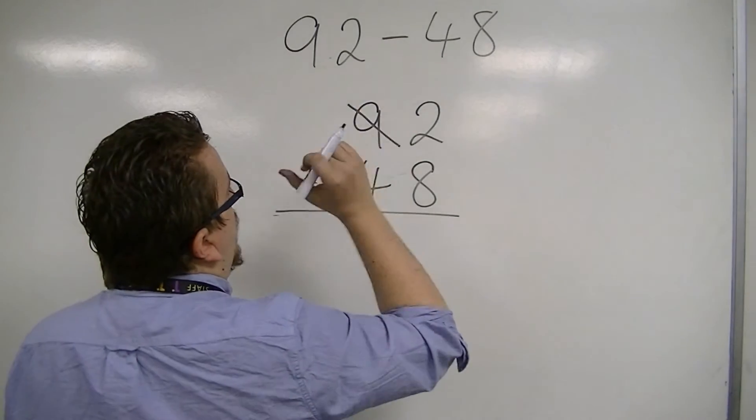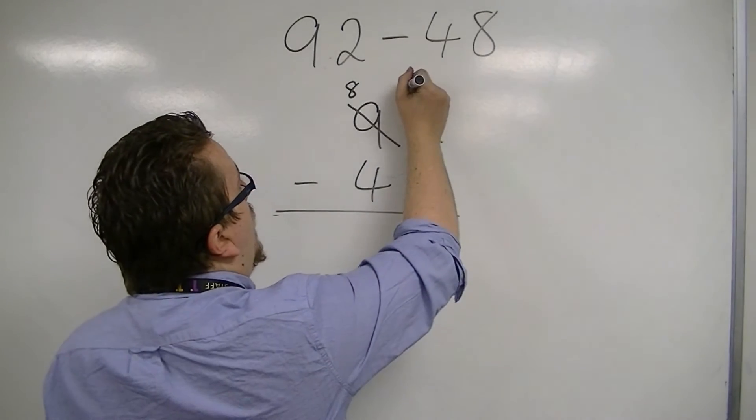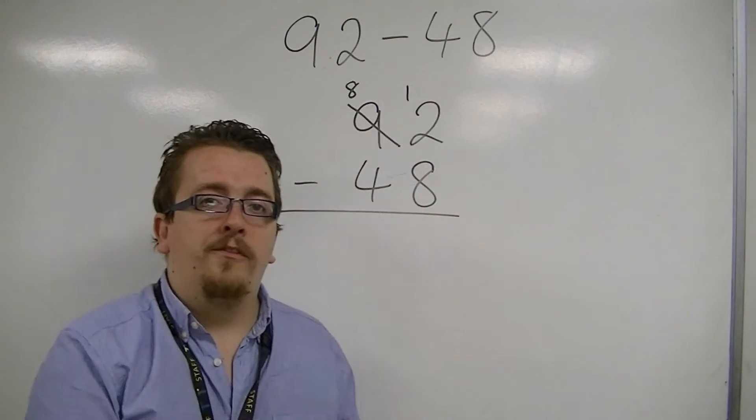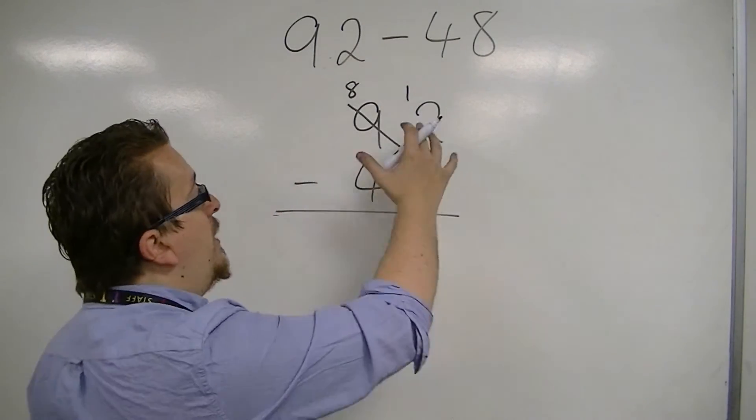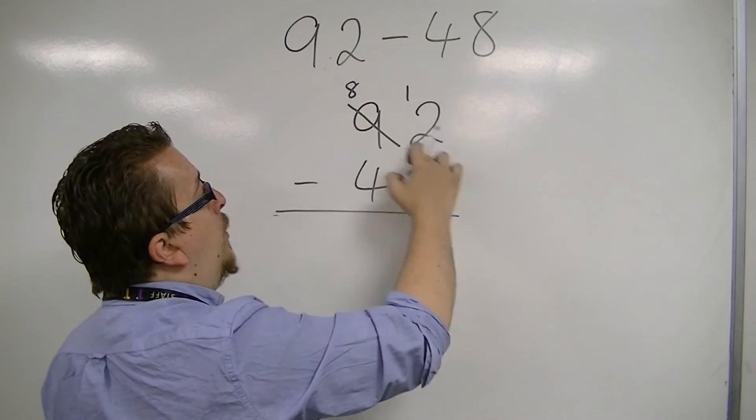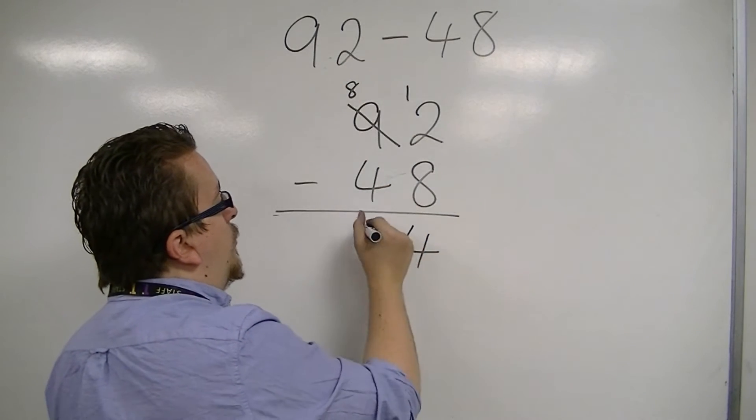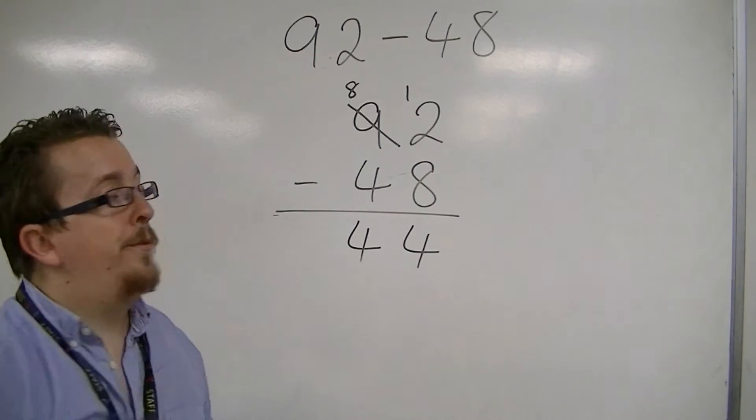So the 9 drops down to 8. So I've taken 1 away. And that 1 can get placed above the 2. So this turns the 2 into 12. 12 take away 8 is 4. And 8 take away 4 is 4. So we're left with 44.